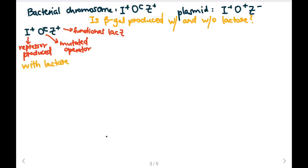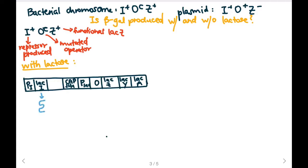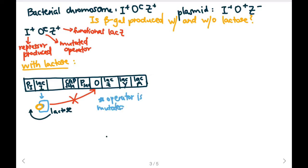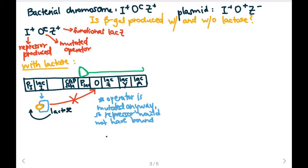With lactose, our DNA sequence is going to produce a repressor protein because our lac I gene is functional. In the presence of lactose, allolactose is going to bind to our repressor protein and change its shape so that the protein cannot bind to our operator. But let's also note that our operator is mutated — it has the haplotype Oc — so our mutated operator would not be able to have a repressor bound to it anyway. This means that RNA polymerase will bind to the promoter, transcribe the three genes, and beta-galactosidase will be produced.